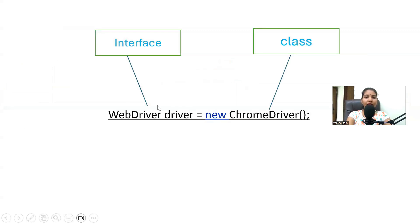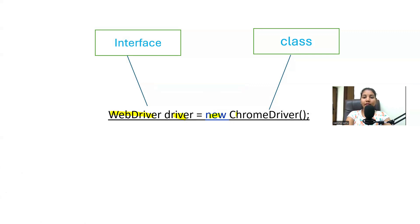Let me explain the concept from left to right. `WebDriver` is an interface — a predefined interface inside the Selenium library. `driver` is a reference variable of this interface. `new` is a predefined Java keyword used to create memory for this particular driver. And `ChromeDriver` is a class.